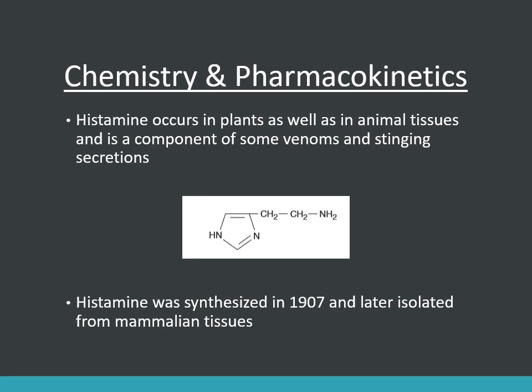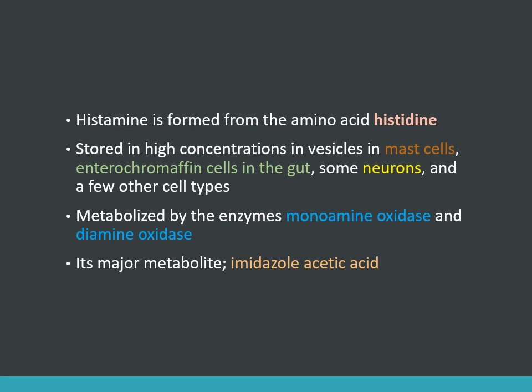Histamine occurs in plants as well as in animal tissues, and is a component of some venoms and stinging secretions such as bee stings or wasp stings. Histamine was synthesized in 1907 and later isolated from mammalian tissues. It is formed by decarboxylation of the amino acid histidine — an important MCQ point — by the enzyme histidine decarboxylase. Histamine is stored in high concentrations in vesicles in the mast cells, enterochromaffin cells of the gut, some neurons, and a few other cell types.